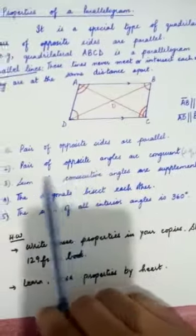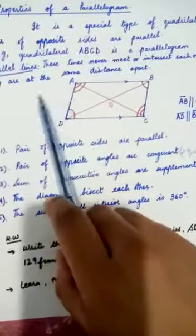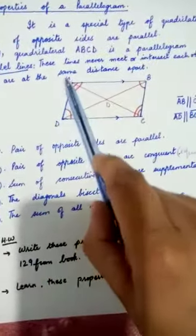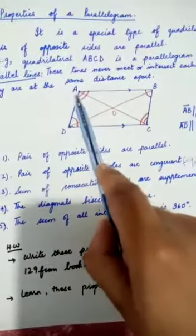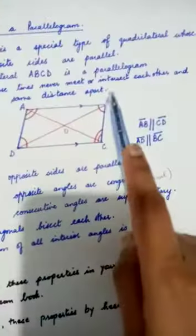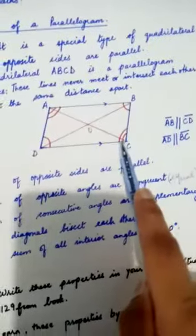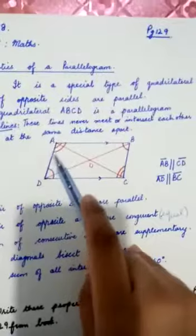The sum of consecutive angles are supplementary. Consecutive angles means angles that are on the same side, like angle A and angle D. When we take the sum of these two, we get a supplementary angle. Similarly, when we take the sum of angles B and C, we get supplementary angles.